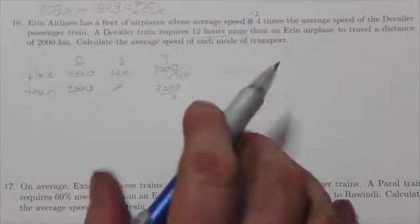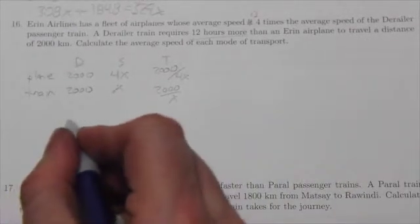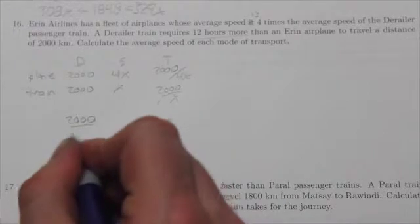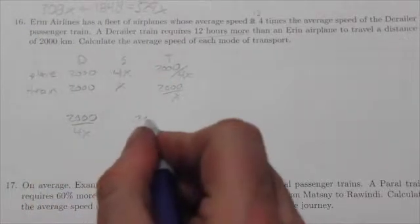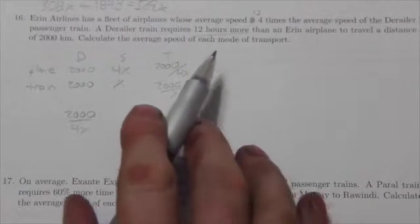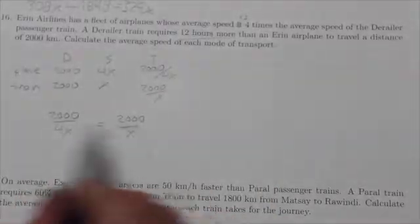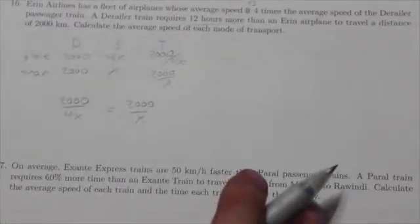We've got to think about how this works. In order to make these things equivalent to each other, we're going to have 2,000 over 4x and 2,000 over x. We're going to have to add an additional 12 hours. We're going to put an equal sign in between here. I don't know where that 12 hours is going to go, but let's think about it.